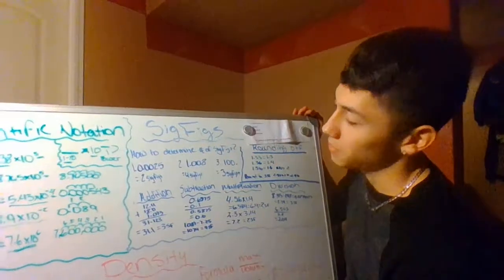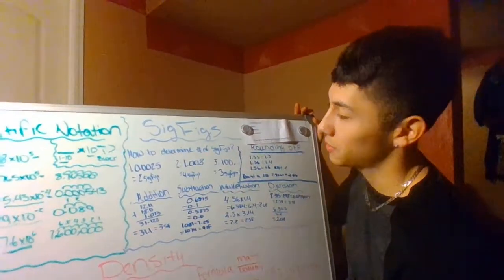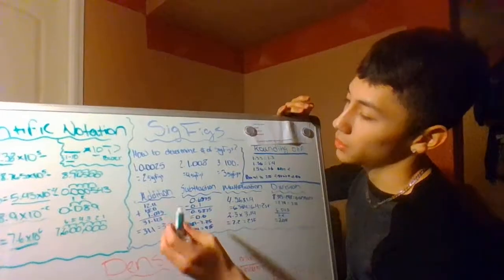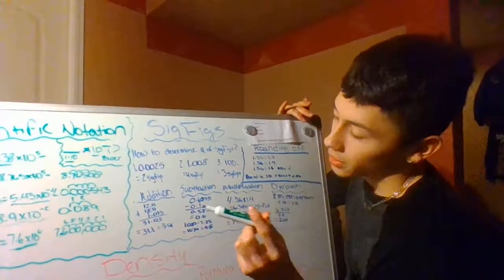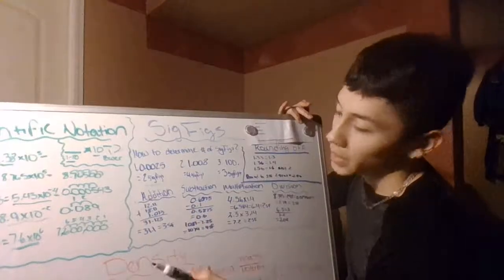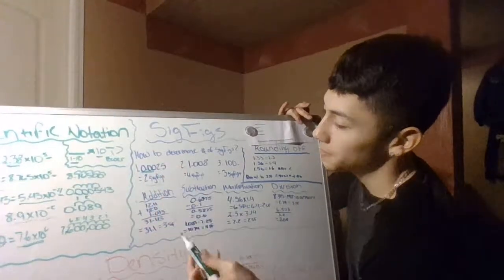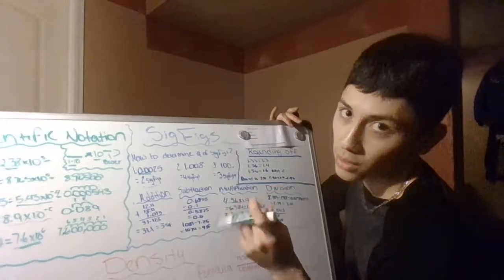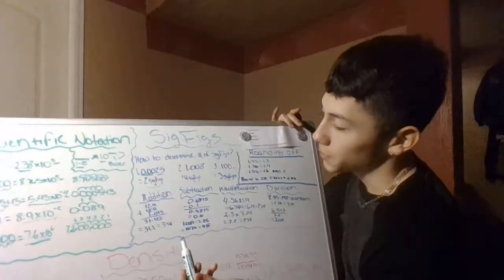Moving on to sig figs — I find them pretty easy. To determine the number of sig figs, take 0.0025 as the first example. This one only has two sig figs, because all the zeros to the left of 2 and 5 are called leading zeros, and leading zeros don't count as sig figs. Only 2 and 5 count, giving you two sig figs.